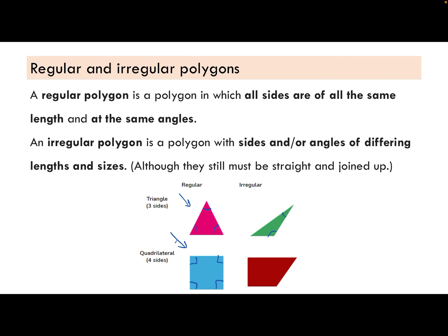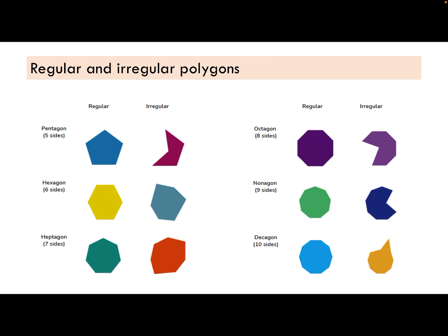So this is an obtuse angle, whereas this is an acute angle. Same here. We've got a 90 degree angle here, 90 degree angle here, an obtuse angle here, and an acute angle here. Irregular over here, regular here.